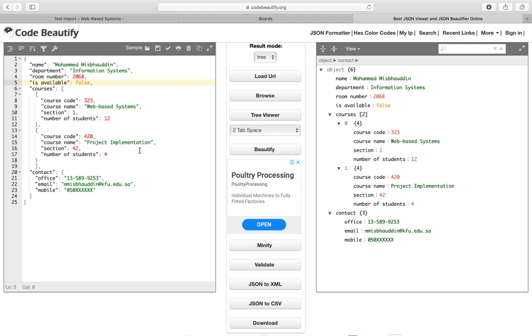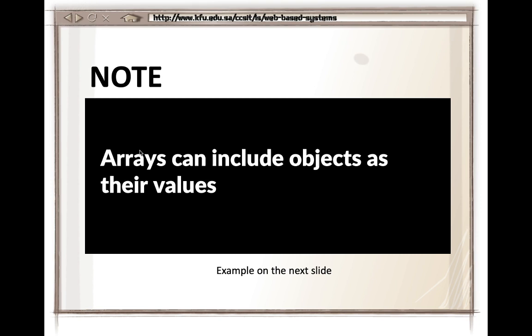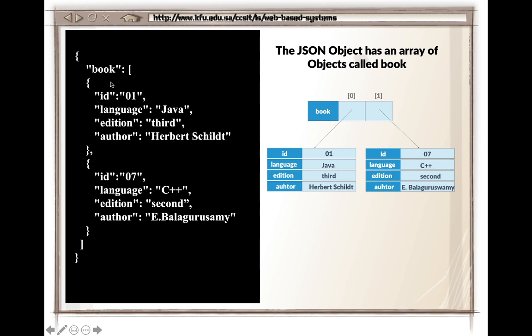This is how a JSON file looks — easy to read, with key-value pairs, arrays, and nested objects. Whenever you make a request to an API, this is the kind of structure you receive in response. The structure of every file will differ based on what data you request, and API creators will document what information is returned and how it is organized. For example, a 'book' key can be an array of objects, each with id, language, edition, and author.